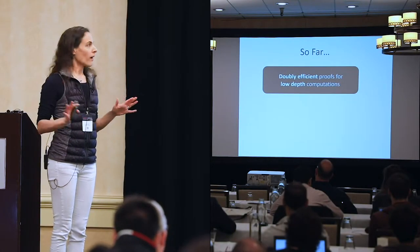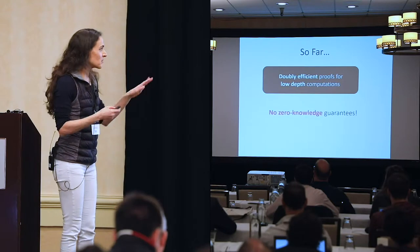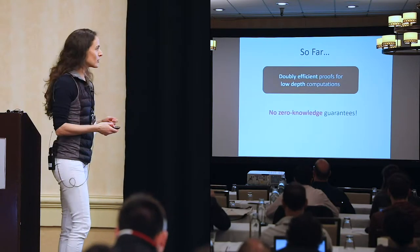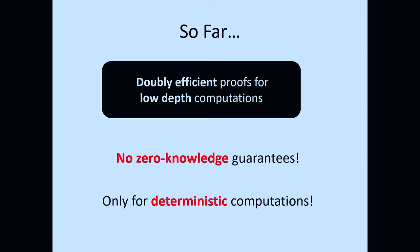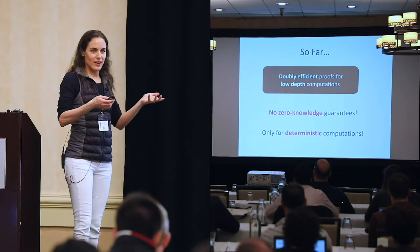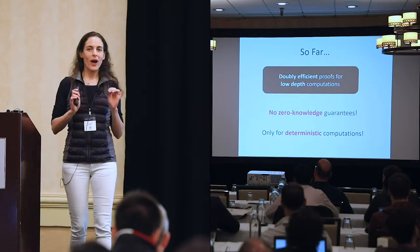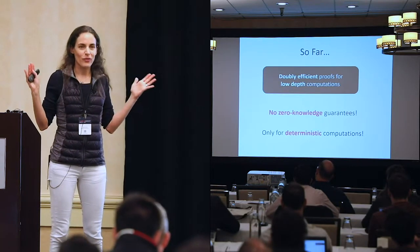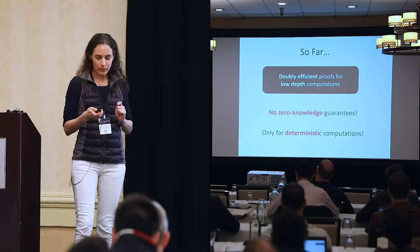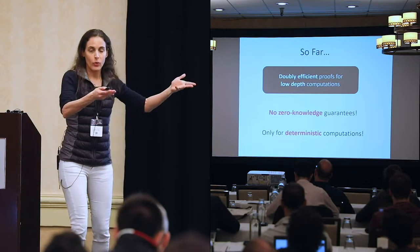So what did we see? Doubly efficient proofs for low-depth computation. But there are no zero-knowledge guarantees — this is a workshop about zero-knowledge. Not only no zero-knowledge, it's only for bounded-depth, not even NP. The goal of GKR was simply efficient verification of computation, with no secrecy in mind. It's an information-theoretic model, secure against an all-powerful cheating prover. No crypto came in yet — and neither did zero-knowledge.